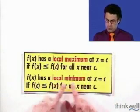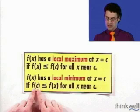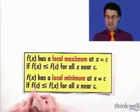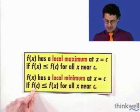F of x is a local minimum at c if, in fact, that is the lowest point nearby c. So, the function is as low as it can be. The water would settle right there at that particular x value. Okay?